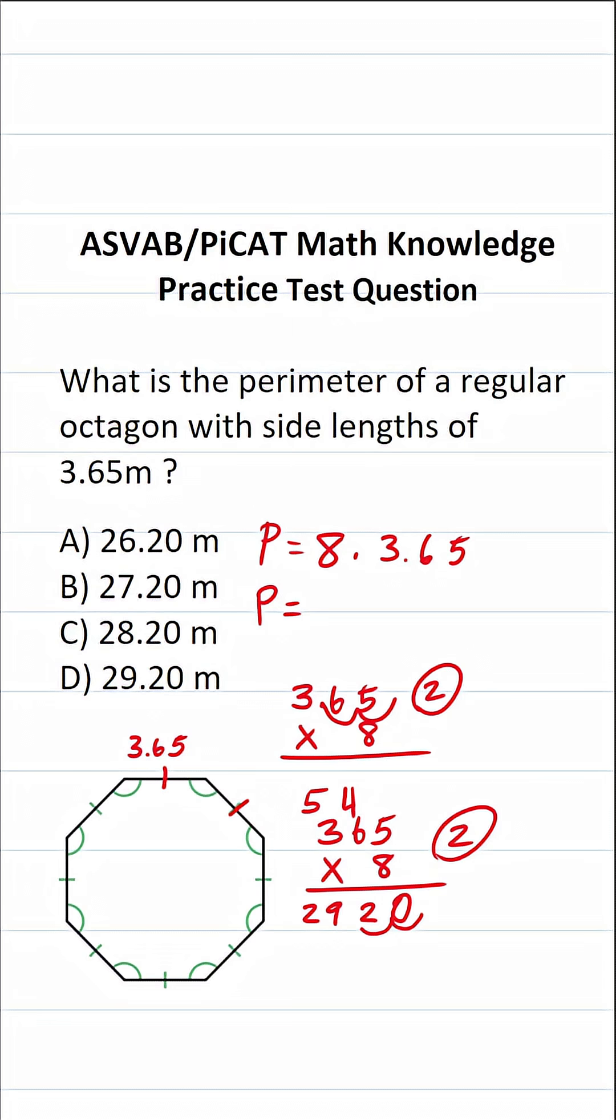Bring in our two decimals, 1, 2. So we can see the perimeter of this regular octagon that has a side length of 3.65 meters is going to be 29.20. So the answer to this one is D.